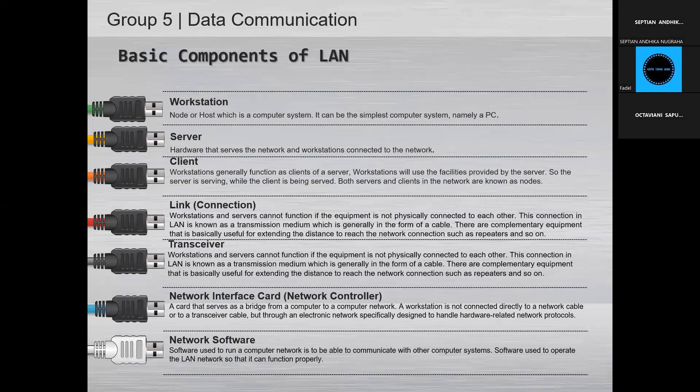Next, we have links or connections. Workstations and servers cannot function if the equipment is not physically connected to each other. This connection in a LAN is known as the transmission medium, which is generally in the form of a cable. There is complementary equipment useful for extending the distance to reach network connections, such as repeaters. We also have transceivers, NIC or network interface controllers, and network software used to run a computer network to enable communication with other computer systems.